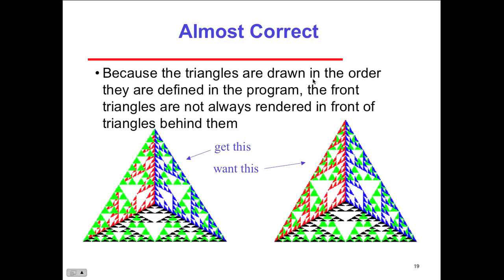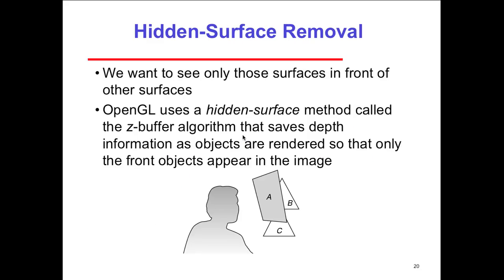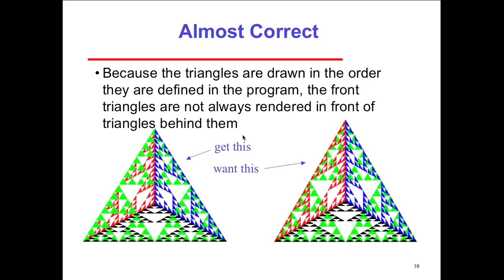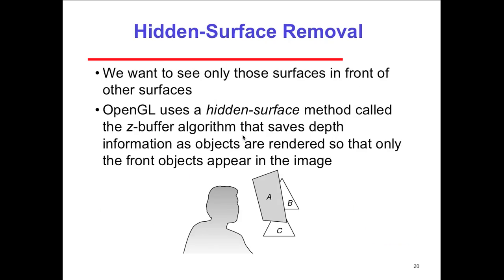Because the triangles are drawn in the order they are defined in the program, the front triangles are not always rendered in the front of the triangles behind them. Good note to actually say, depending upon how you're rendering the image and building it, you're going to get different results because of the way that the image is rendered. So it has to do with the order in which the right triangles are rendered.